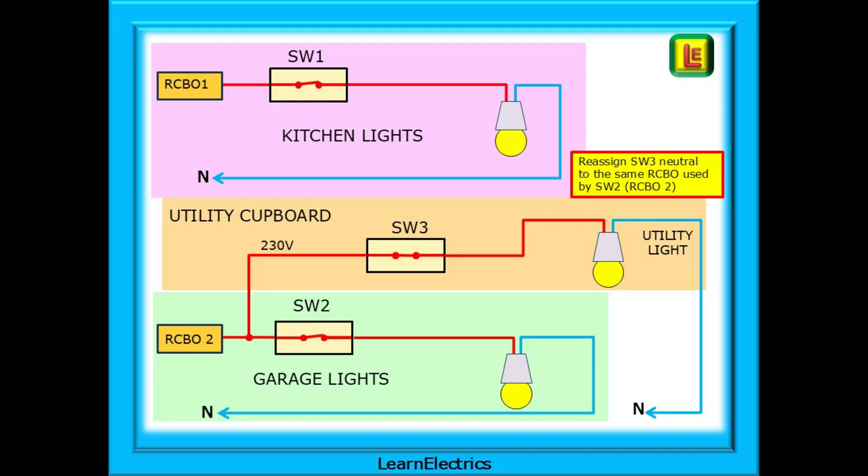The problem was easily put right. We reassigned the utility room neutral SW3 to the same RCBO used by the garage circuit, which is switch 2 and RCBO 2, and all was okay. It would have been possible to reassign the line conductor for SW3, the utility room, to the RCBO for the kitchen lights. Either way would have worked.